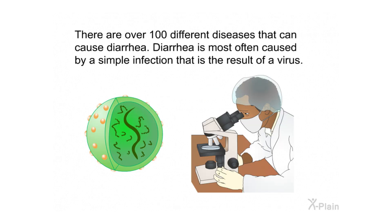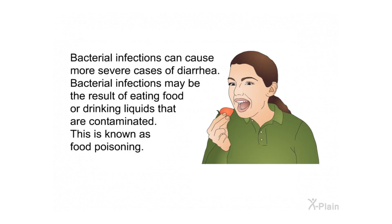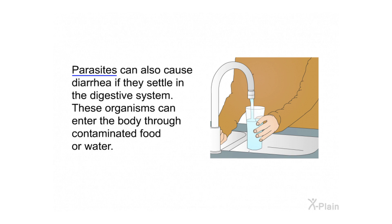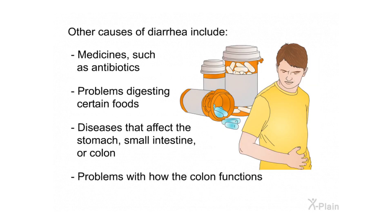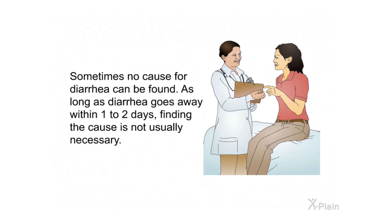There are over 100 different diseases that can cause diarrhea. Diarrhea is most often caused by a simple infection that is the result of a virus. Bacterial infections can cause more severe cases of diarrhea and may be the result of eating food or drinking liquids that are contaminated — this is known as food poisoning. Parasites can also cause diarrhea if they settle in the digestive system. Other causes include medicines such as antibiotics, problems digesting certain foods, and diseases that affect the stomach, small intestine, or colon.